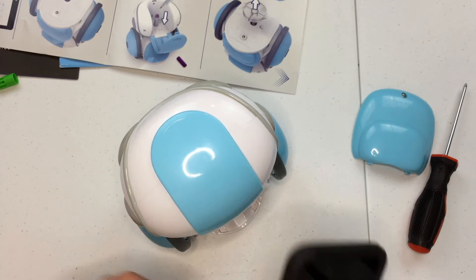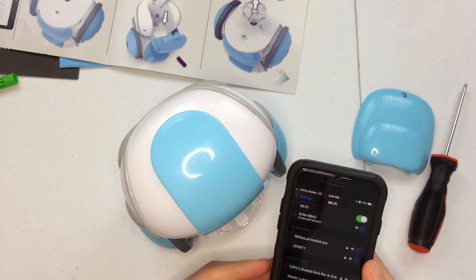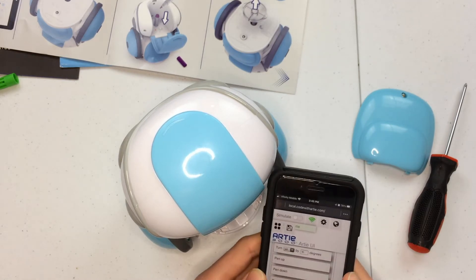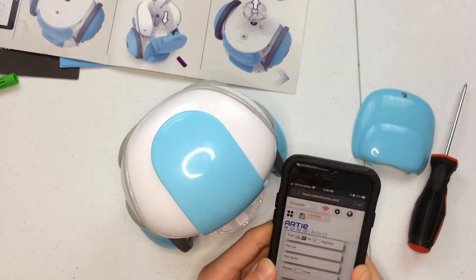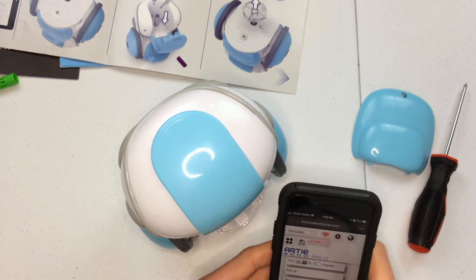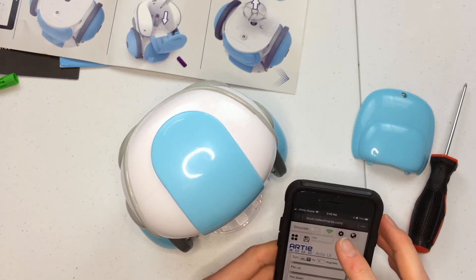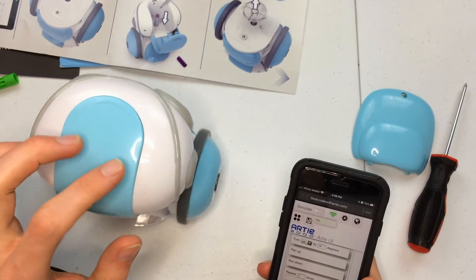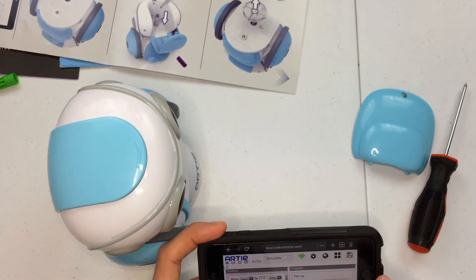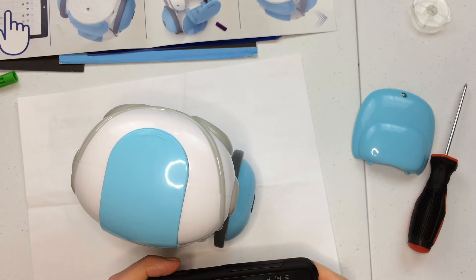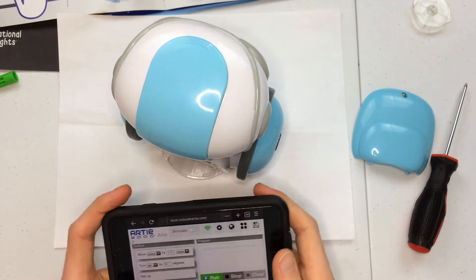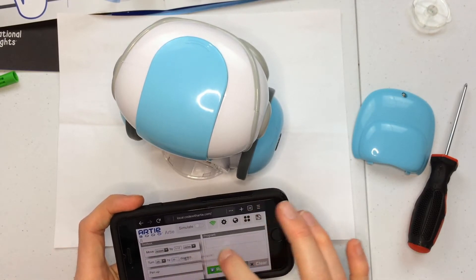Okay, so we are connected to the local code with Artie. So this website has connected to the robot. It just keeps disconnecting from Wi-Fi. Let's see if we can drag a function over and then run it. Okay, so it's working.